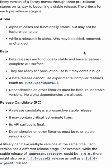I'm going to give you an example for the AndroidX Activity library. There are three release stages, as you can see here: alpha, beta, and release candidate. In the alpha stage, features can be added, removed, or changed.